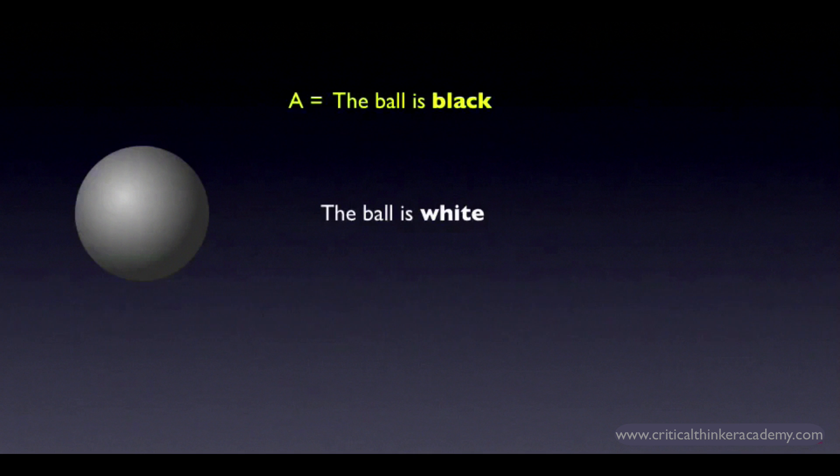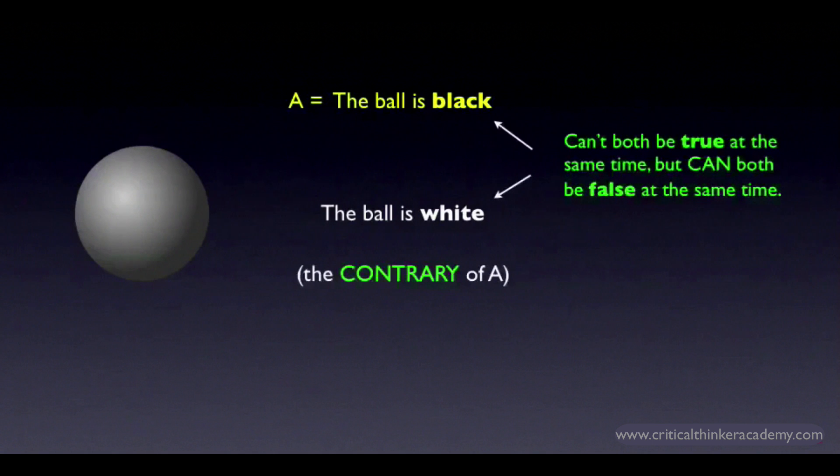We do have a word to describe pairs of claims like these though. They're called contraries. Two claims are contraries of one another if they can't both be true at the same time. They can both be false. So the ball can't be both black and white. But if it's gray or red or blue, then it's neither black nor white. These are contraries not contradictories.